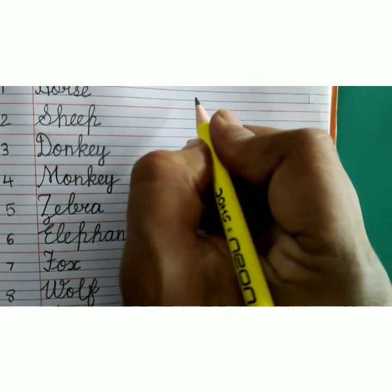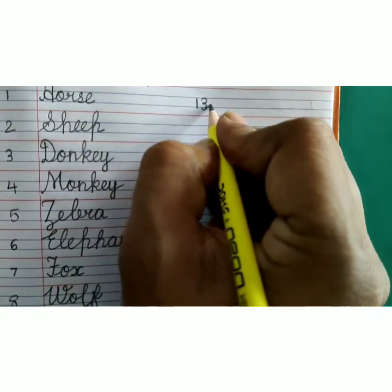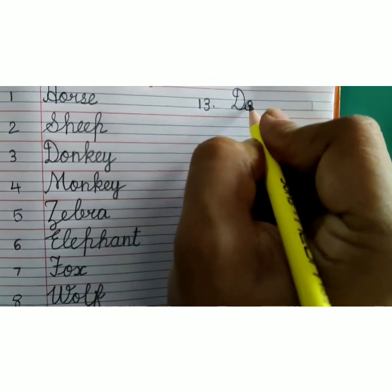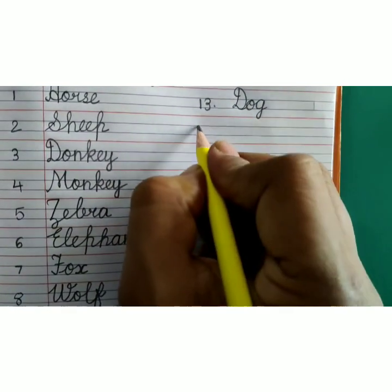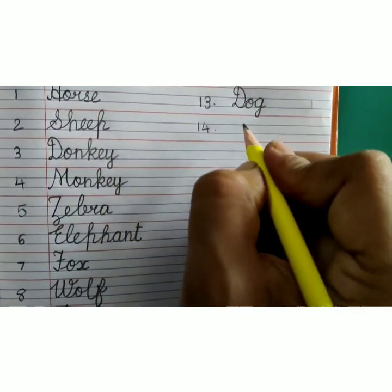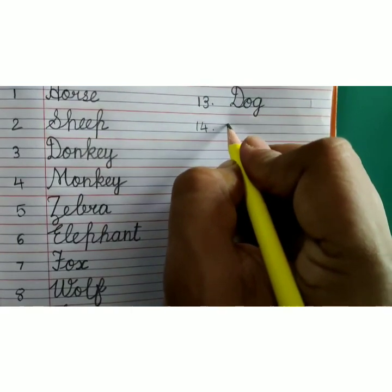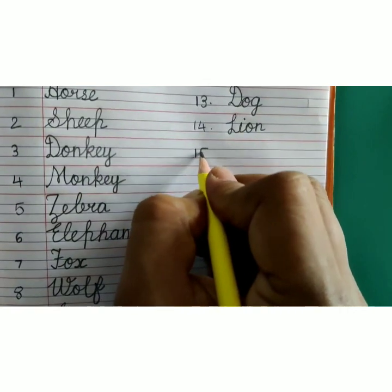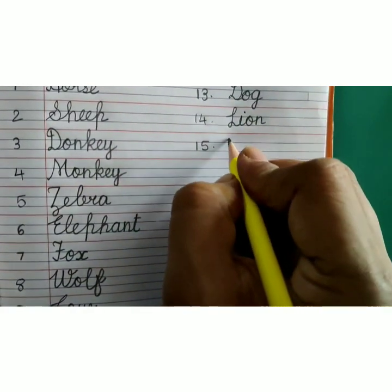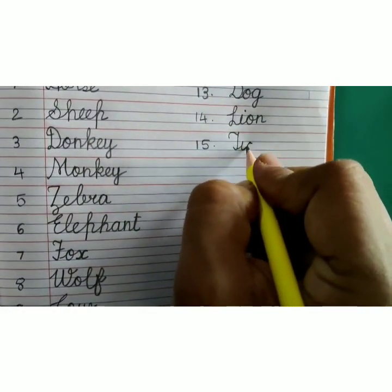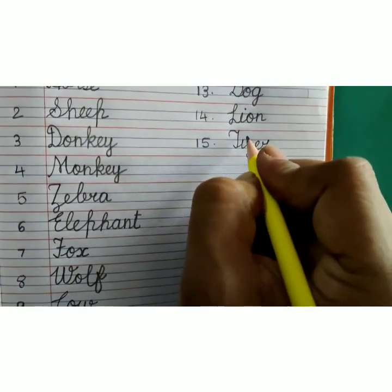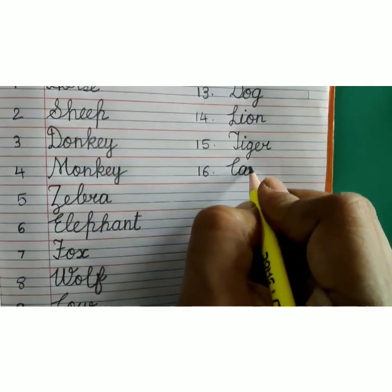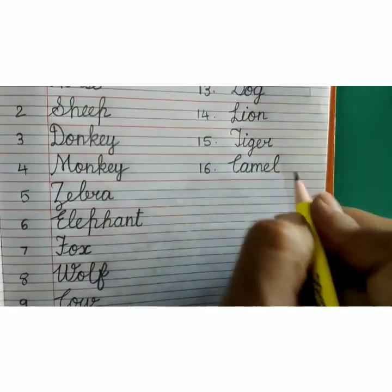Now, on the same page, write number 13, leave one finger space. D-O-G, dog. Number 14, leave one finger space. L-I-O-N, lion. Number 15, leave one finger space. T-I-G-E-R, tiger. Number 16, leave one finger space. C-A-M-E-L, camel.